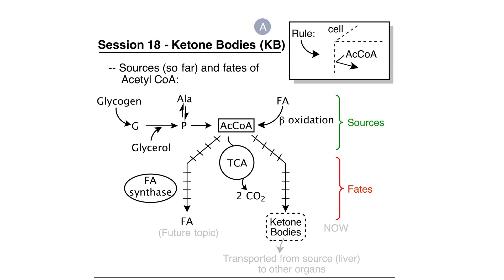Panel A shows various sources of and uses of acetyl-CoA, and shows that ketone bodies are made from acetyl-CoA. Let's start with a discussion of where acetyl-CoA comes from and what its various fates are, including the formation of ketone bodies. A fatty acid can be broken down to form acetyl-CoA by beta-oxidation, usually with the objective of generating energy.